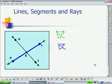And now the last thing we are going to talk about is ray DC. So we will again, we'll start at D and ray DC would start at D and continue in the direction of C.